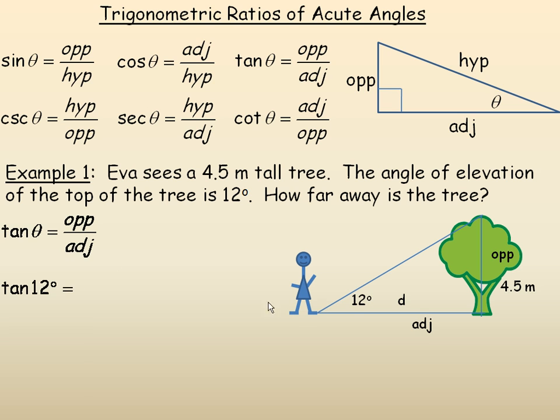The angle is 12 degrees. The opposite side is 4.5, so in place of opposite side we'd put 4.5. And in place of the adjacent side, I'd put the d. Cross-multiplying, the d times the tan of 12 degrees would equal 4.5 times 1, or just 4.5.